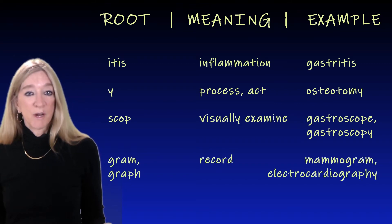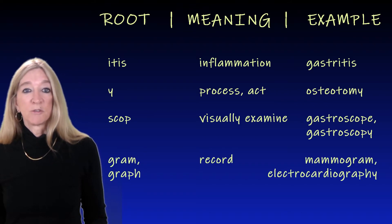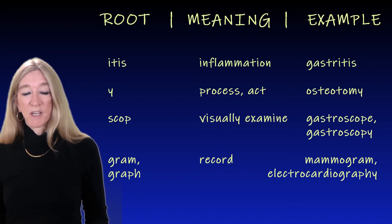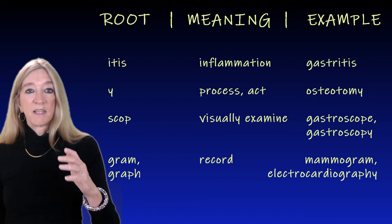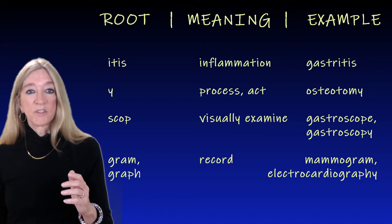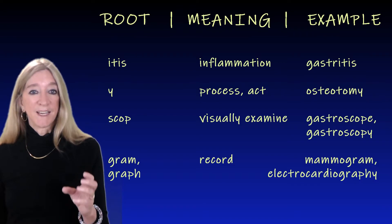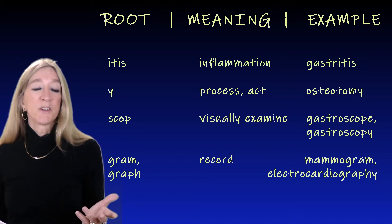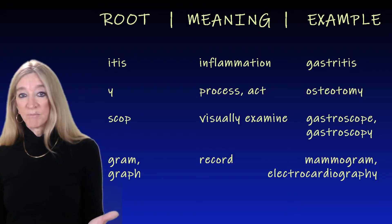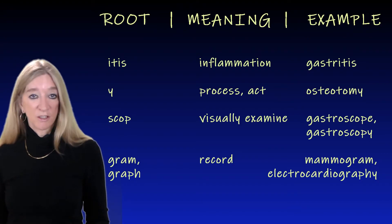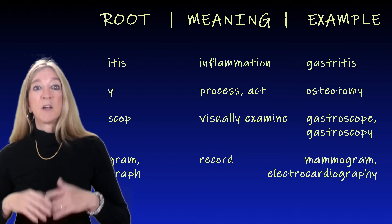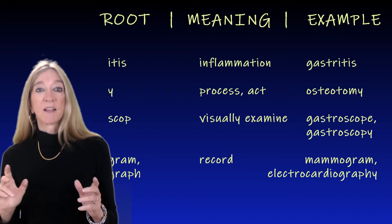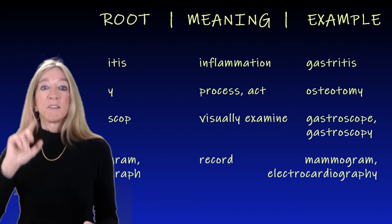The next roots are 'gram' and 'graph,' meaning to record. Examples are mammogram, a record of breast health, and electrocardiography, the measurement and recording of electrical activity in the heart. You've seen those roots in words like hologram, diagram, and autograph. Note the pronunciation shift with that 'y': mammogram, mammography; gastroscope, gastroscopy.